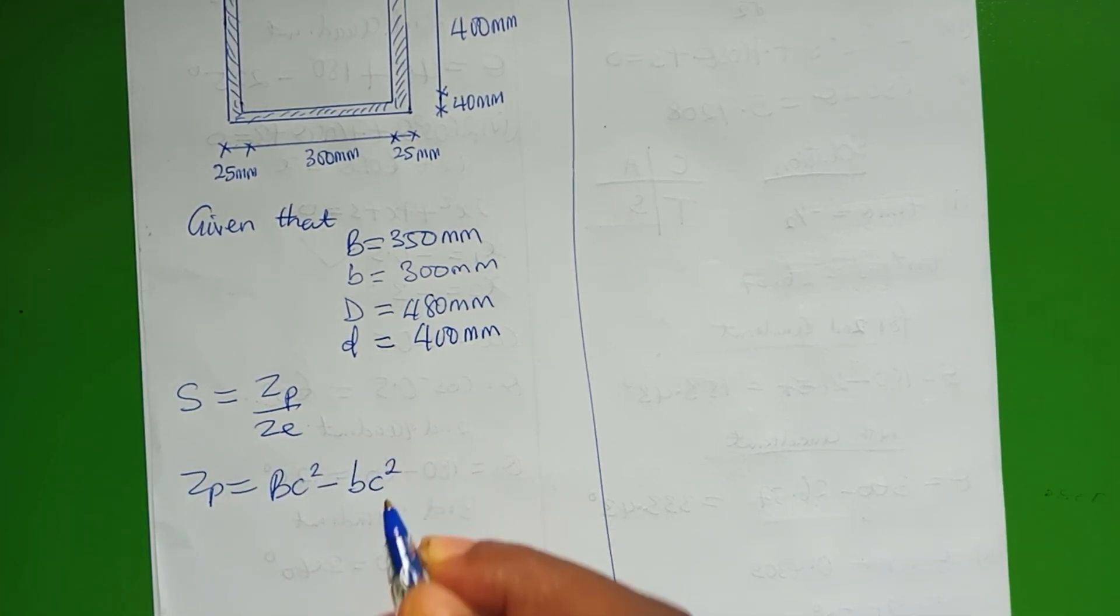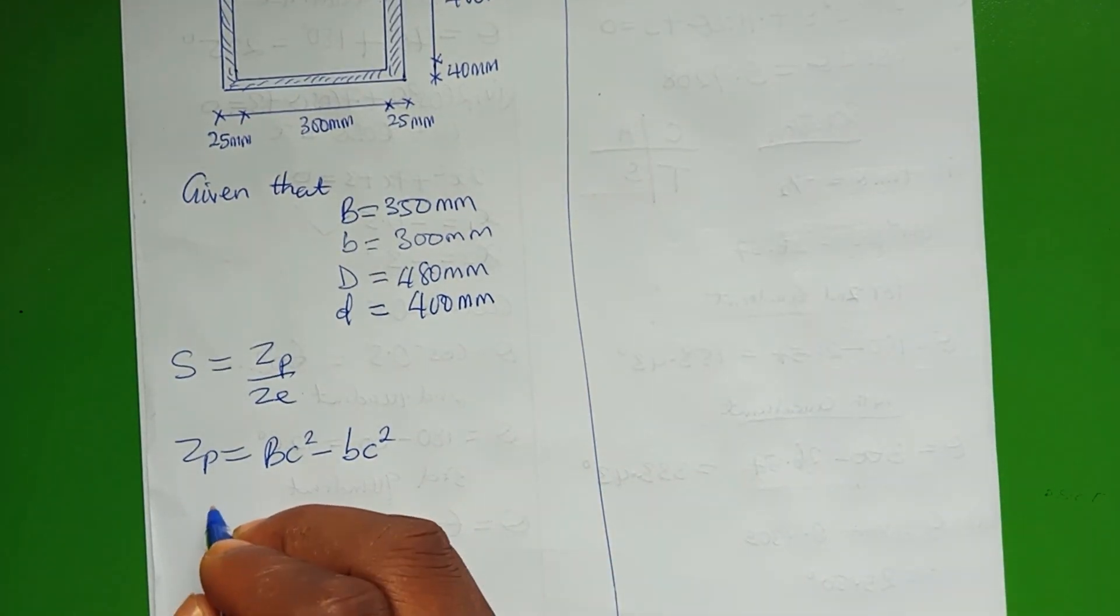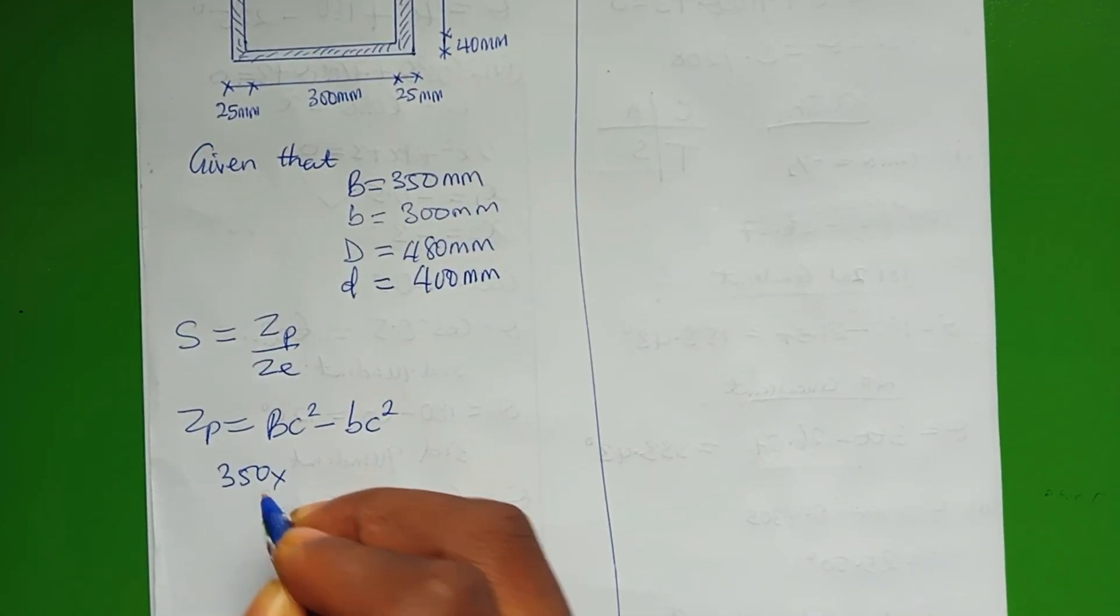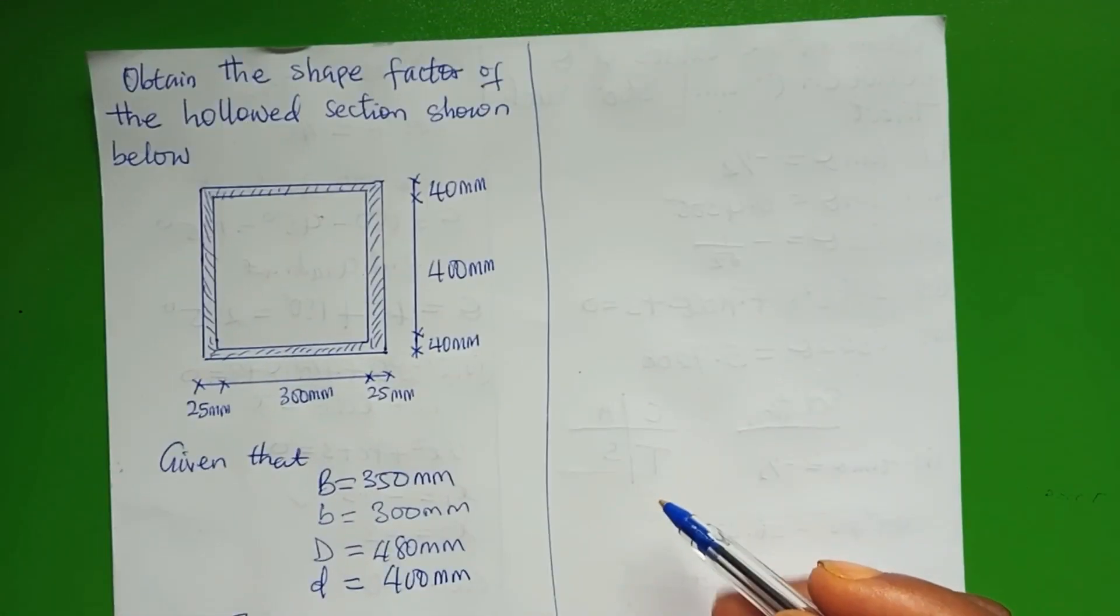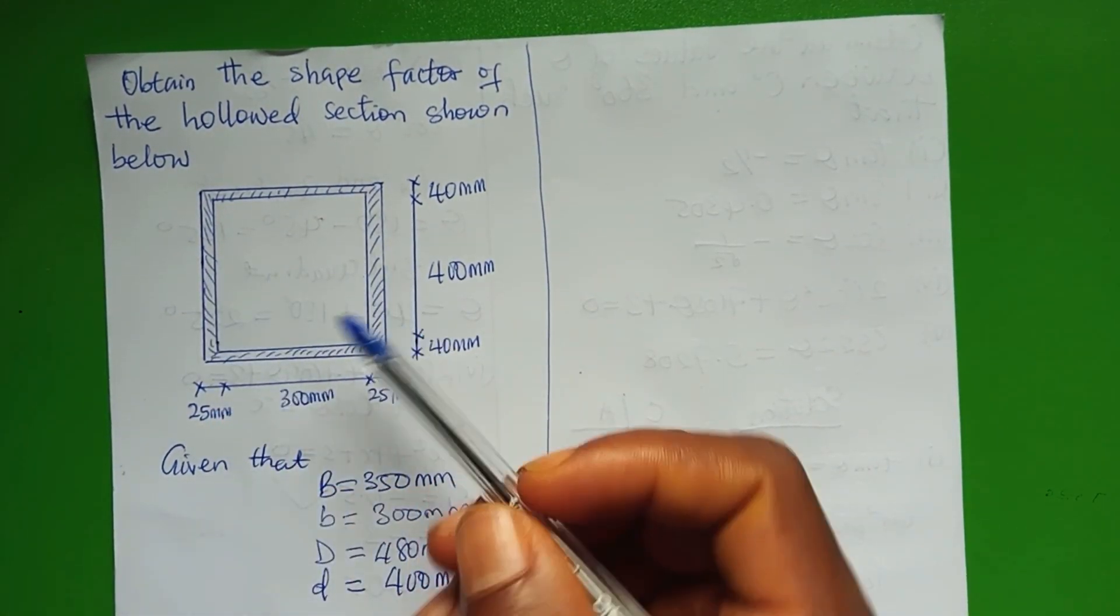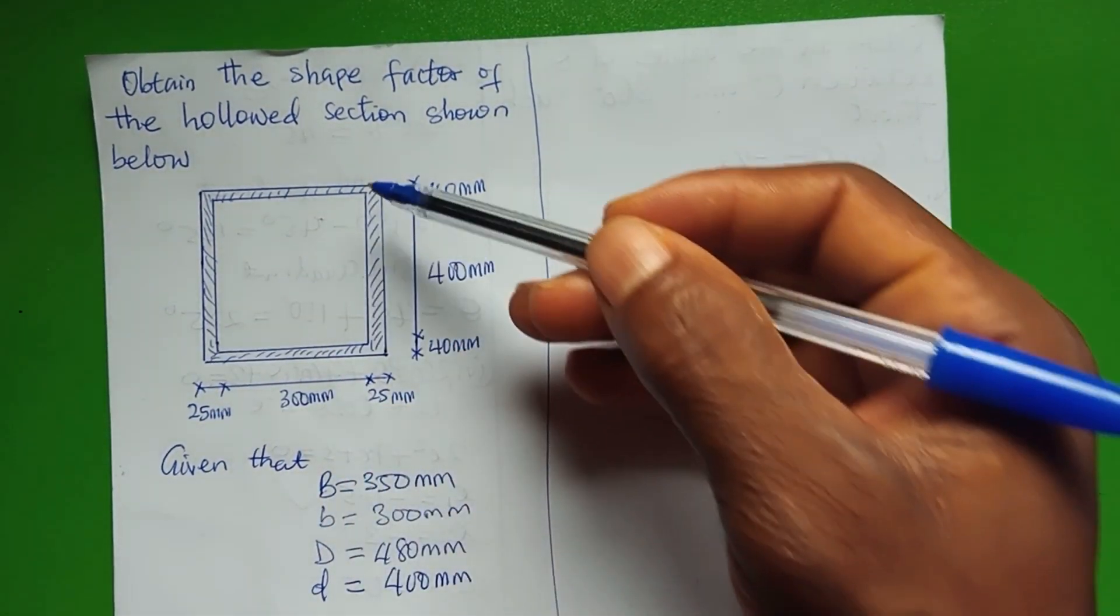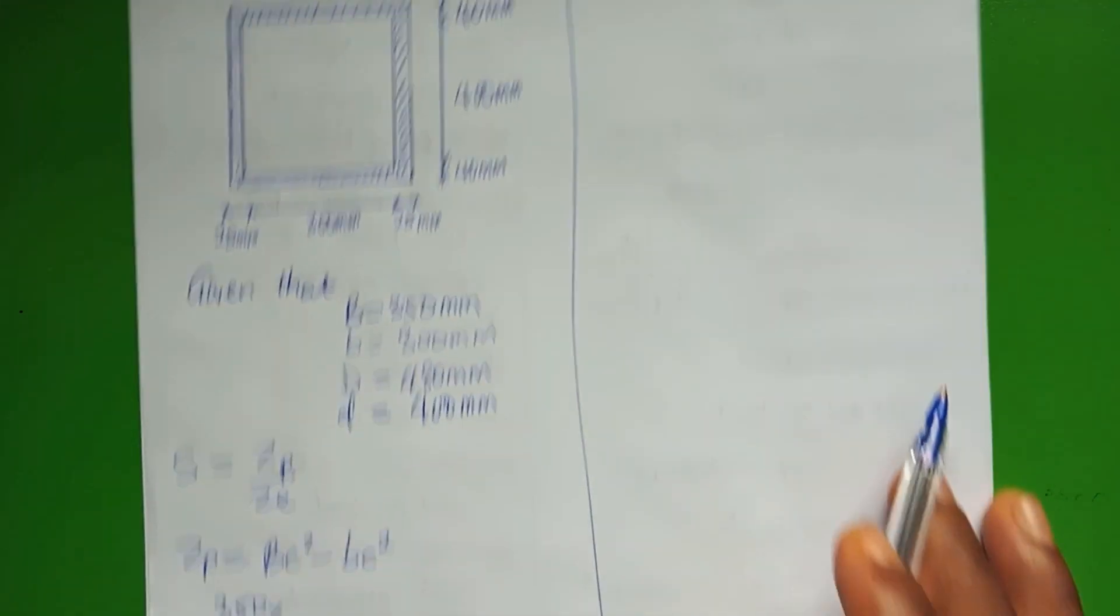Our plastic modulus is BC squared minus the small square inside. Our B is 350 multiplied by C, and this C is just like the centroid. The centroid of this shape will be at the middle, that is the total depth divided by 2.